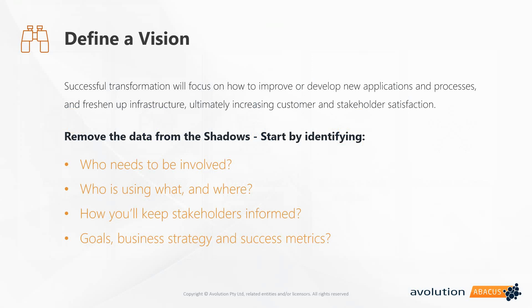All of this work to sort through identification is going to help reveal who needs to be involved, who is using what and where, and how you'll keep stakeholders informed. It's not just a question of who has information and who can provide feedback, but also how you're going to inform those stakeholders and how you're going to measure success. So defining a vision often comes down to setting SMART goals, having a clear business strategy, and making sure that you're identifying success metrics.